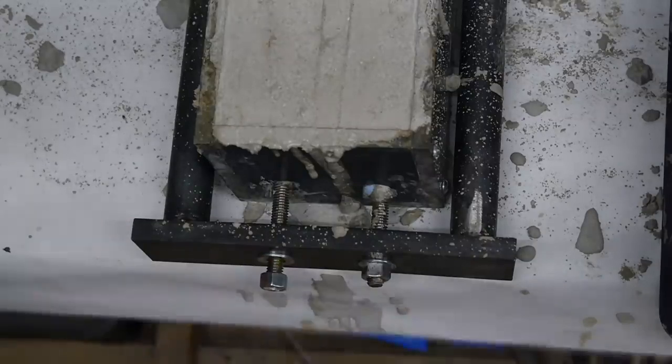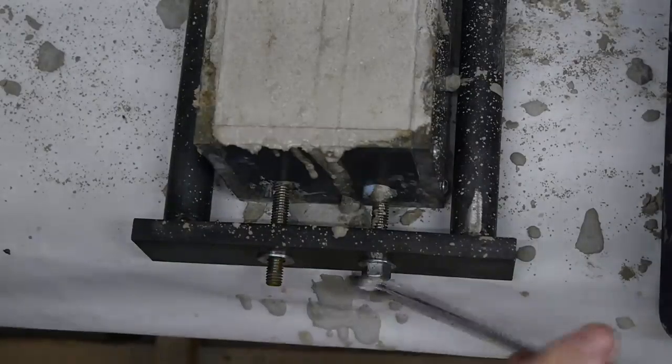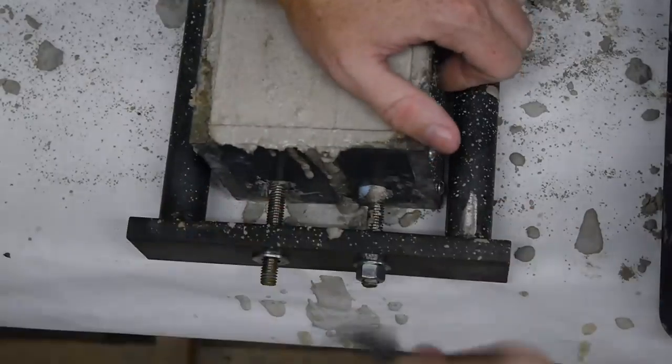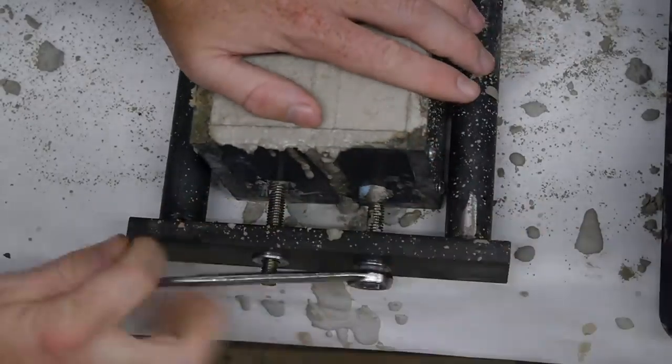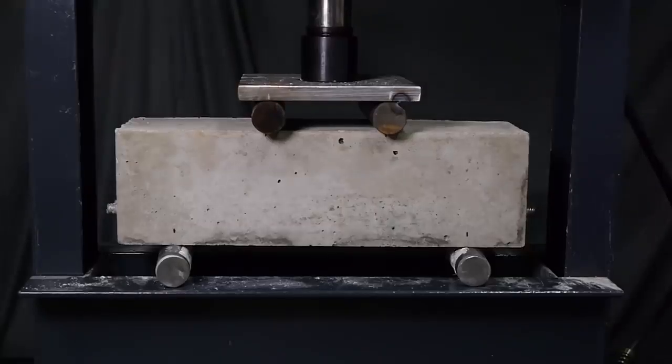After the concrete has some time to cure, it's time to test the beams out. On the pre-tension beam, I can unscrew the nuts and take off this frame. Because the concrete hardened around the bolts, the steel rods are still under tension inside the beam. I put it under the hydraulic press for testing, and the results are easy to see.